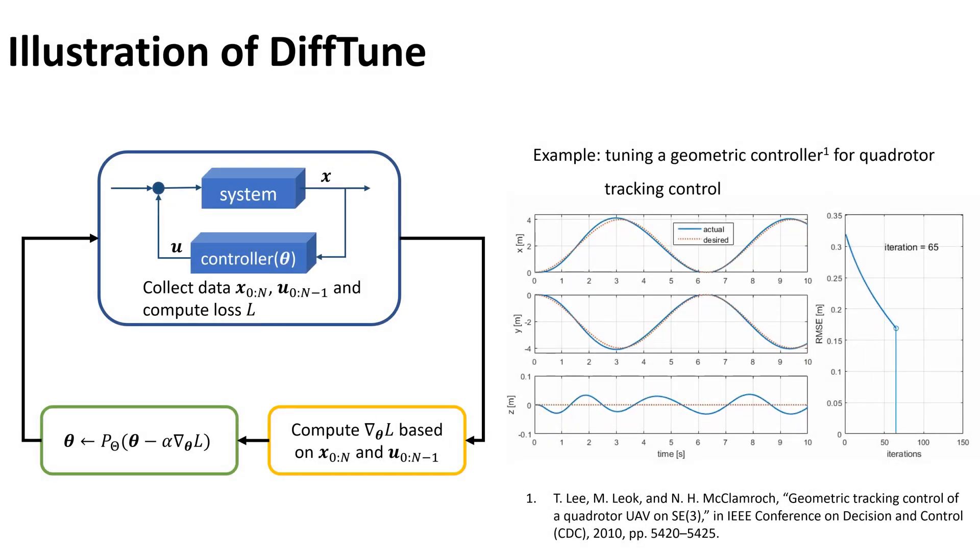DiffTune iteratively collects data from a system over a horizon. The data are then used to evaluate the gradient of the loss function with respect to the controller parameters. We update the parameters using projected gradient descent and apply them back into the system to repeat this procedure.